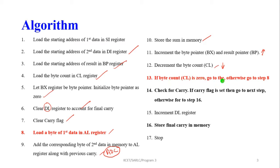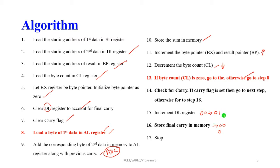Next, decrement the byte count in the CL register. If the CL value is not zero, go back to step 8 and repeat. This loop repeats until CL becomes zero. If the carry flag value is 1, increment the DL register — DL is initialized to 00 and incremented by 1 to store the final carry. Otherwise, if carry flag is 0, store 00 in the final carry memory location.